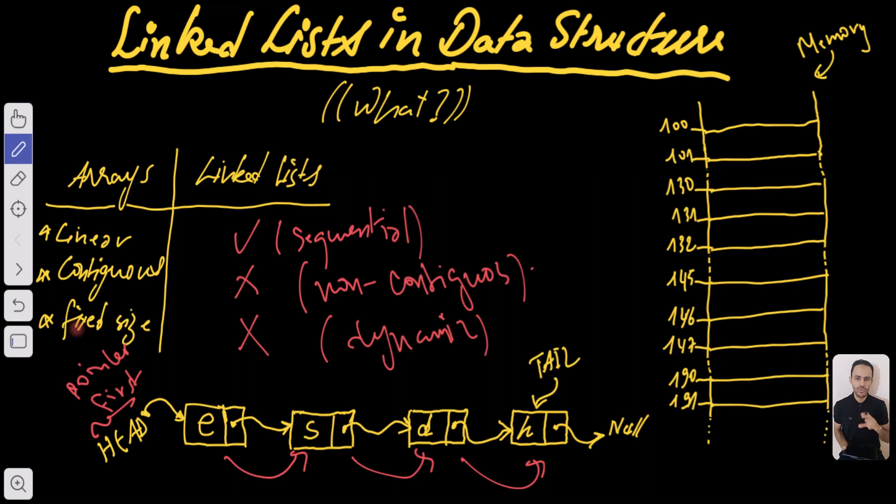The second terminology is what we call a node and nodes are the building blocks of the linked list. They are often composed of two elements: first a value and second a pointer to the next element in the list. And finally we have what we call a tail and tail is a pointer to the last element in the list. So these are the main terminologies related to linked lists.